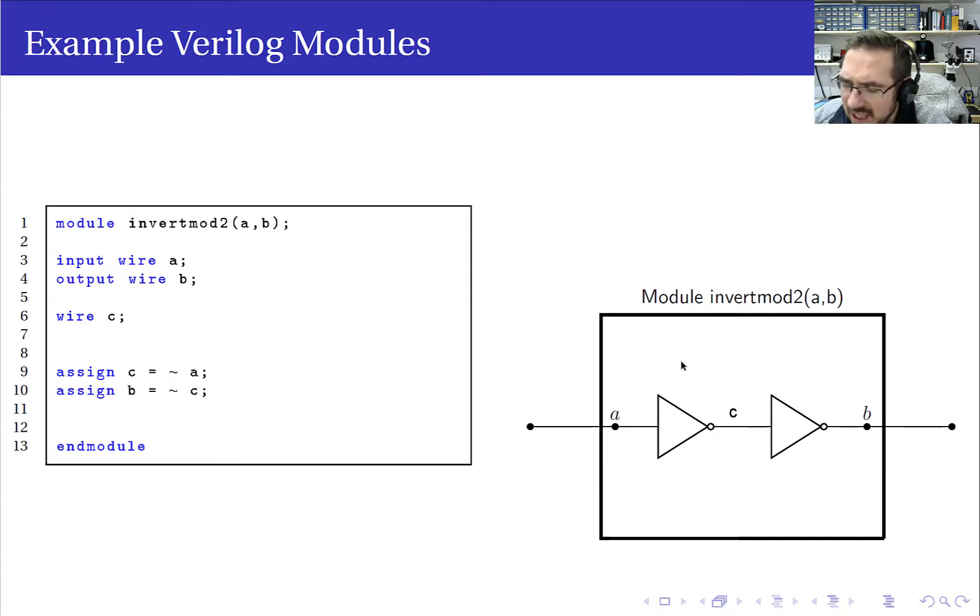Now if you did this in an actual Verilog module, the compiler would probably just remove these two gates and just give you a straight line, because effectively that's what it is. If you go from zero to one and then one to zero, then you always end up back to what you started with. So the compiler would basically not synthesize this. But this is just an example of a simple Verilog module with an internal wire.